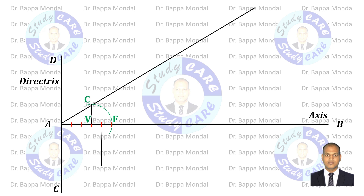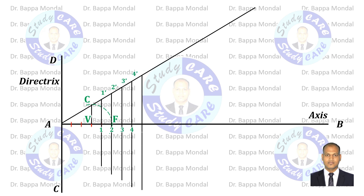The intersection points with AB are given numbering as 1, 2, 3, 4, 5 and so on. Similarly, the intersection points with the AC extended line are named 1', 2', 3', 4', 5' and so on.